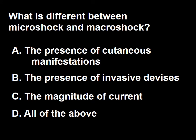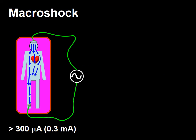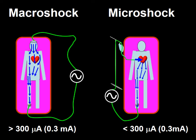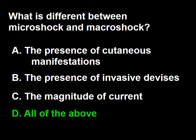Next question: what is different between microshock and macroshock? A: the presence of cutaneous manifestation, B: the presence of invasive devices, C: the magnitude of the current, D: all of the above. A macroshock is the clinical consequence of a large externally applied current — the magnitude of the current is above the perception threshold. A microshock is defined as a small quantity of electricity not large enough to be perceived if applied to the skin, but capable of producing ventricular fibrillation if applied to the skin in patients with internal devices close to the heart, or if applied directly to an internal device. The answer to this question is D.